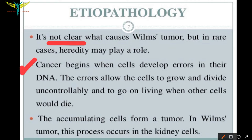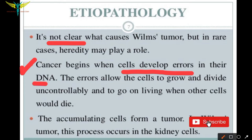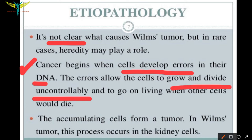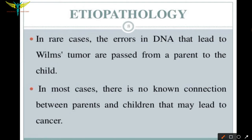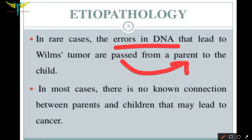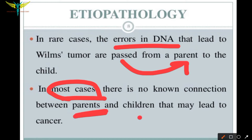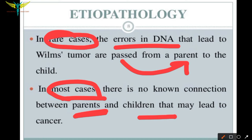The cancer begins when cells develop errors in their DNA. These errors allow the cells to grow and divide uncontrollably and to continue living when other cells would die. The accumulation of these cells forms a tumor. In rare cases, the DNA errors that lead to Wilms' tumor are passed from parent to child — that is, hereditary conditions. In most cases, there is no known connection between parent and child that leads to this tumor.